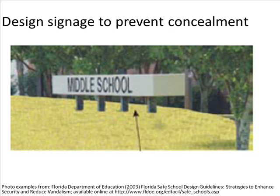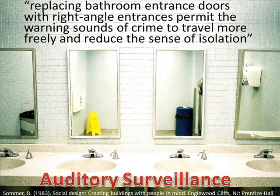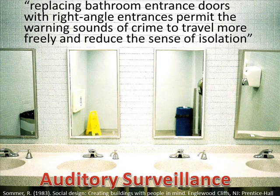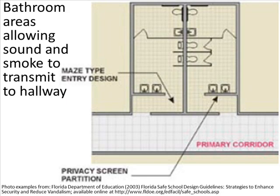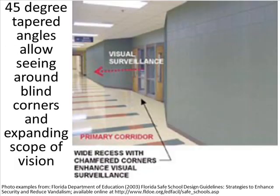Also consider signage — make sure it is not substantial enough to present concealment. Replacing bathroom entrance doors with right-angle entrances permits warning sounds of crime to travel more freely and reduces the sense of isolation — a form of auditory surveillance. Creating a maze-type entry design with a privacy screen partition rather than doors creates bathroom areas that allow smoke and sound to be transmitted easily to the hallway, thus increasing surveillance.